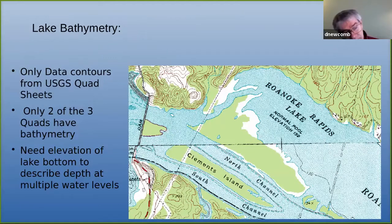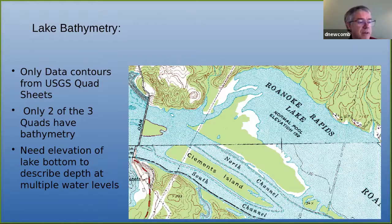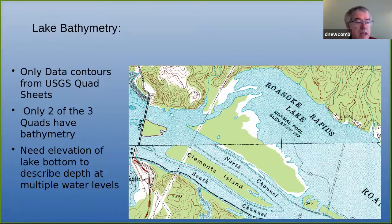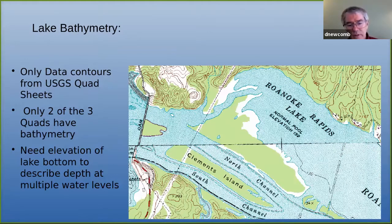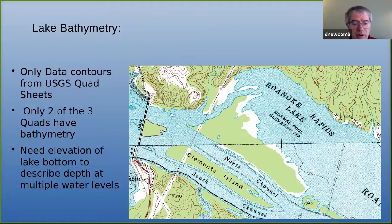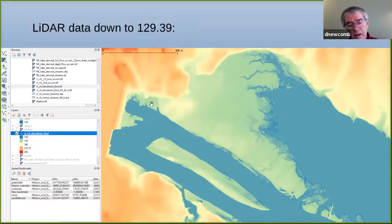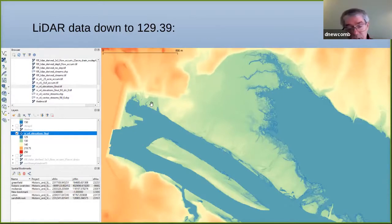That leaves the lake. The only public and non-public data I could find for lake bathymetry were contour lines from the old quad sheets, and only two of the quads that cover the lake had those. That gives me a normal pool elevation of 132, which doesn't help too much. I need the elevation of the lake bottom to describe the depth at multiple water levels. My LIDAR data gets me down to 129.39 feet — considerably different than what the quad sheet shows.